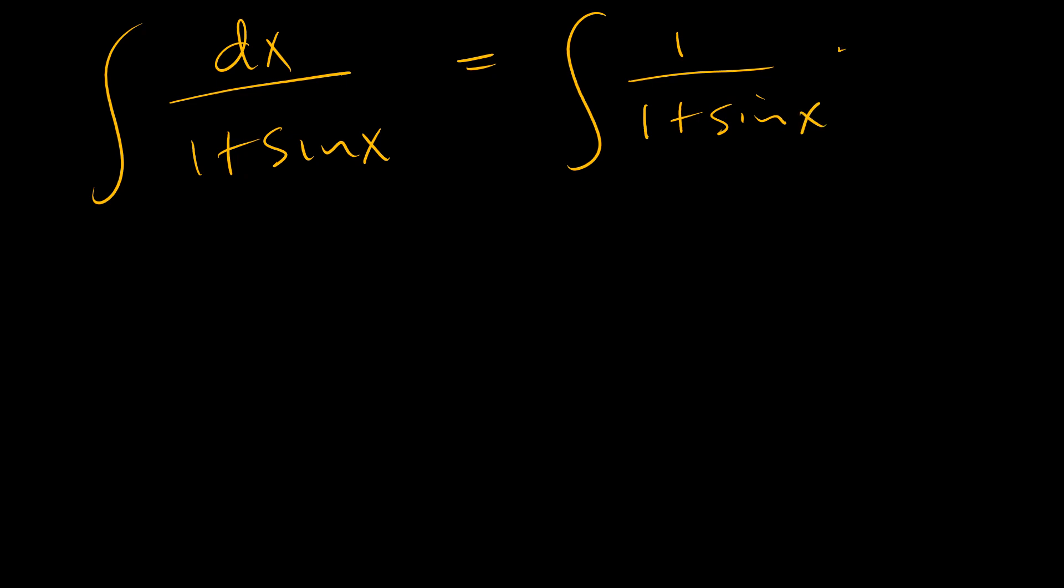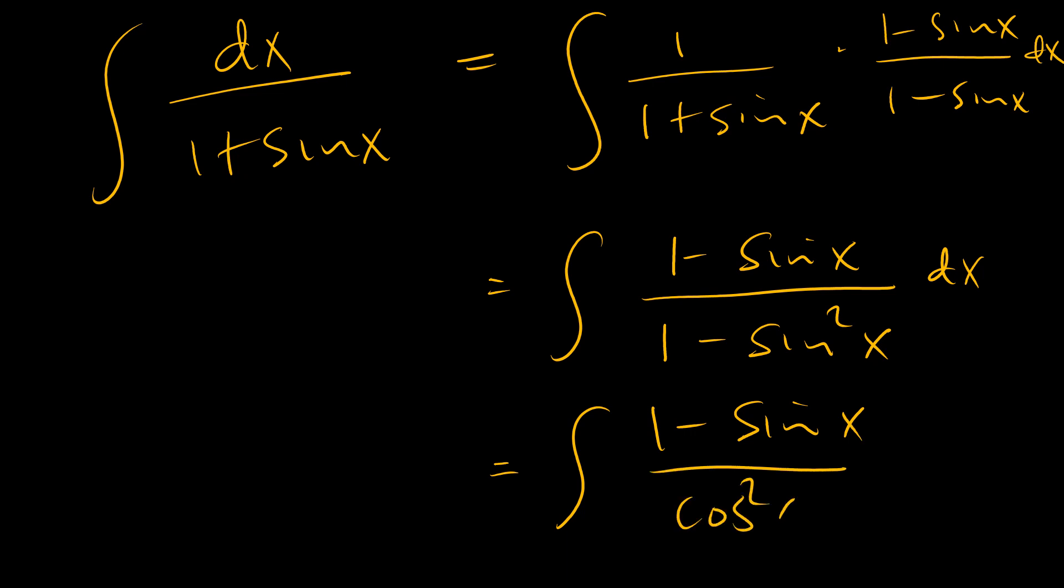So 1 minus sine x up, 1 minus sine x below. So this becomes 1 minus sine x over, so we have a difference of two squares going to take shape there. So we have 1 minus sine squared x in the denominator. So 1 minus sine x is the same as cosine squared x, so we have 1 minus sine x over cosine squared x.